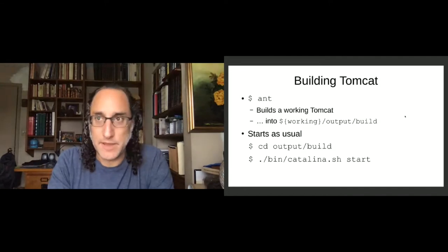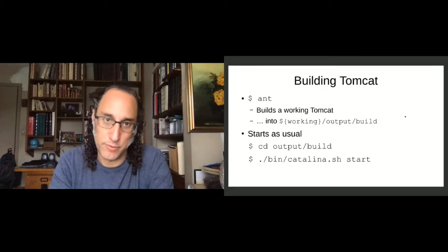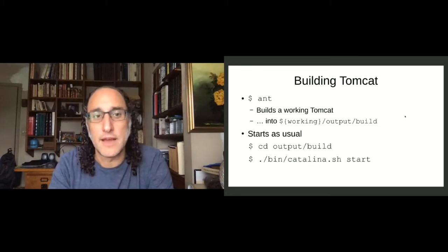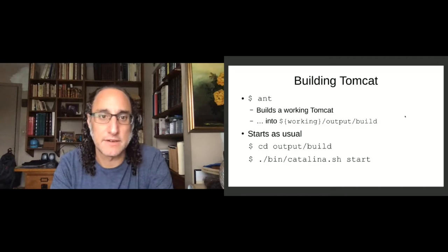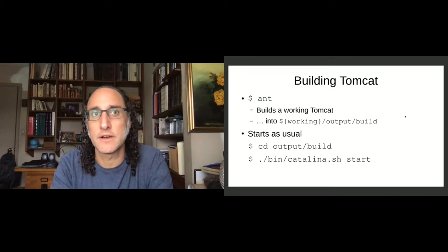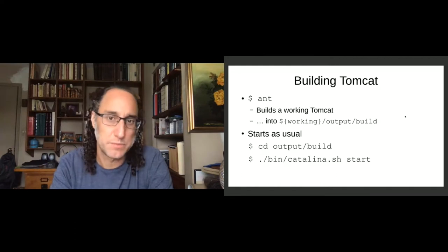To build Tomcat, you will need four keys on your keyboard: the A key, the N key, the T key, followed by Enter. That will build a working Tomcat into the output/build directory. Depending on the speed of your machine, it might take a couple of minutes — on my machine, a build from clean usually takes something like 30 seconds. It's pretty quick.